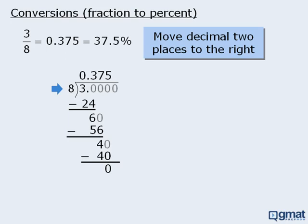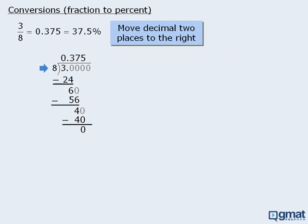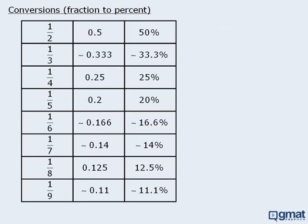So three-eighths is equal to 37.5%. On the GMAT, we don't want to spend valuable time performing long division to make conversions from fractions to percents. One way to speed up these conversions is to memorize a conversion table. This table is identical to the fraction-decimal conversion table from a previous lesson, except we have now added a new column for percent. If you memorize these base conversions, you will be able to make similar conversions quickly.